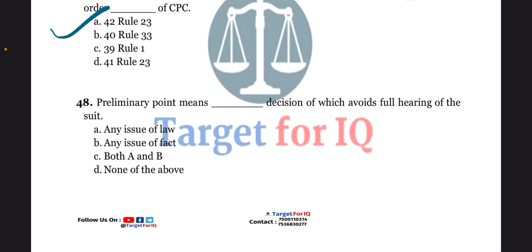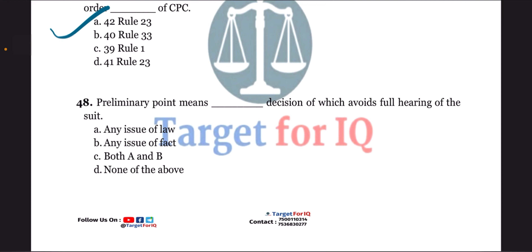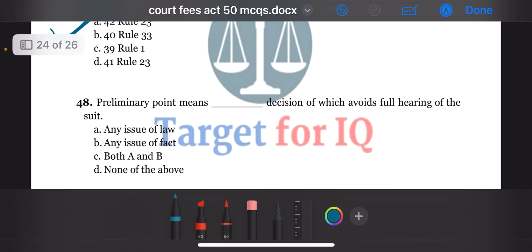Next question: preliminary point means dash — decision of which avoids full hearing of the suit. The options are A. Any issue of law, B. Any issue of fact, C. Both A and B, or D. None of the above. The correct answer is option B. Any issue of fact.